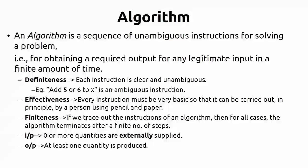The final property is output. Why are you writing all these things, why are you writing an algorithm? Definitely you require output. That is why at least one quantity must be produced. These five properties — definiteness, effectiveness, finiteness, input, and output — must be kept in mind whenever you write an algorithm.